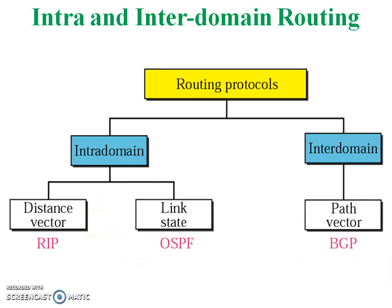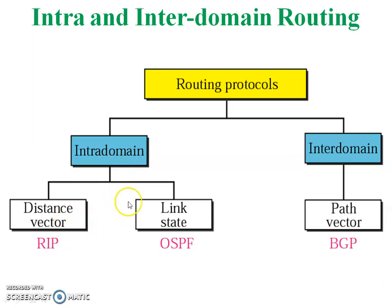Classification of intra and inter domain routing protocols: Unicast routing protocols are divided into two parts — intra domain and inter domain. Intra domain is divided into two types: distance vector, for example RIP, and link state, for example OSPF.